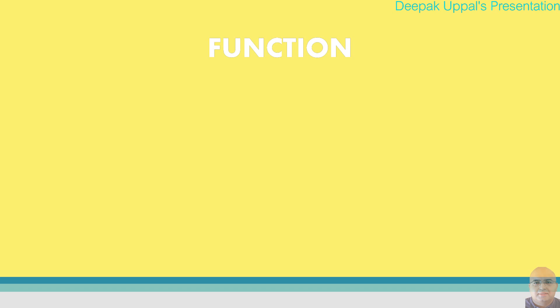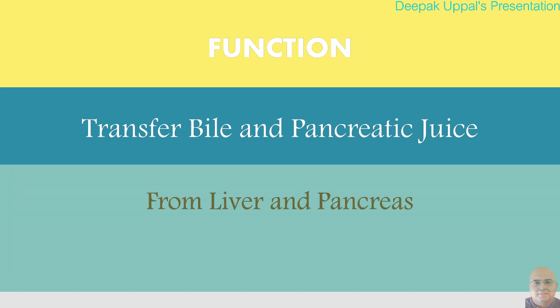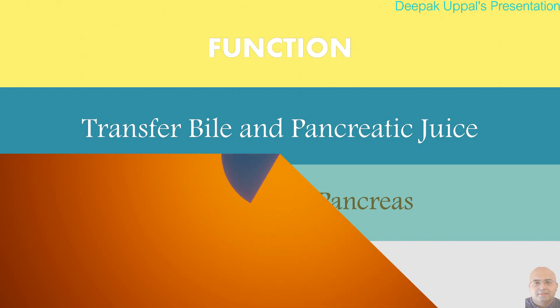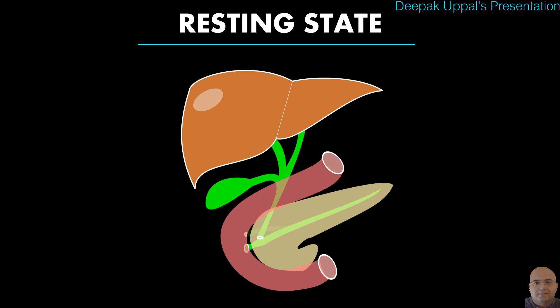Functioning of the hepatopancreatic duct system: The main function of this duct system is to transfer digestive juices from the liver and pancreas to the alimentary canal. There can be two instances. Instance one: when digestion is not happening, or we have not taken any food.